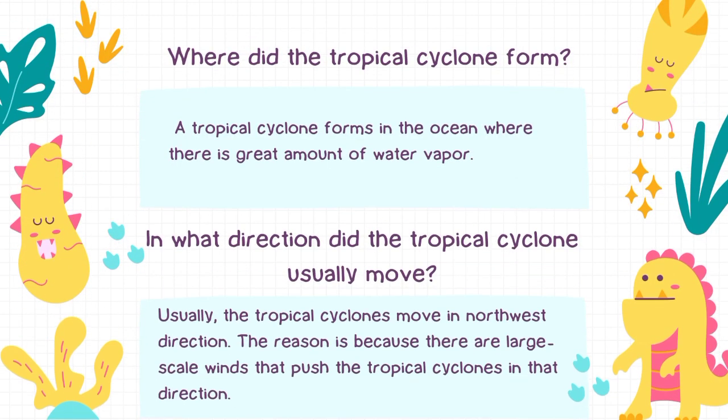Where do tropical cyclones form? A tropical cyclone forms in the ocean where there is a greater amount of water vapor. In what direction do tropical cyclones usually move? Usually, typhoons move in a northwest direction because there are large-scale winds that push tropical cyclones in that direction.